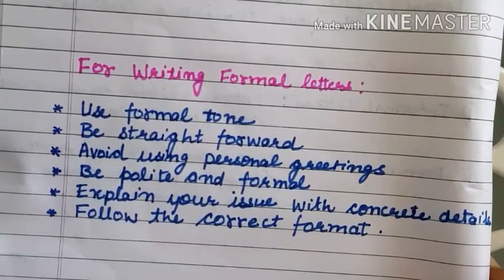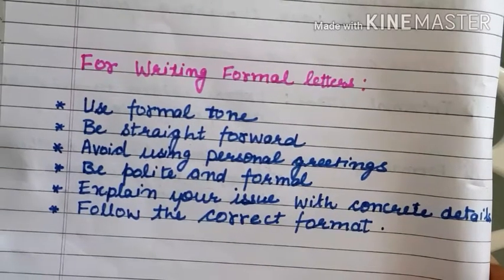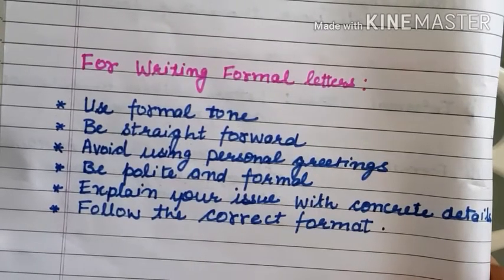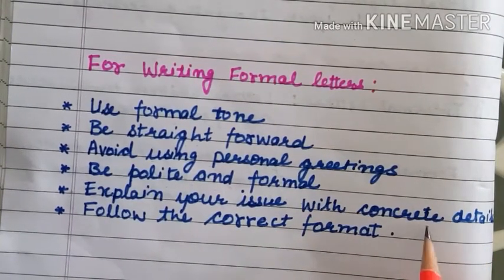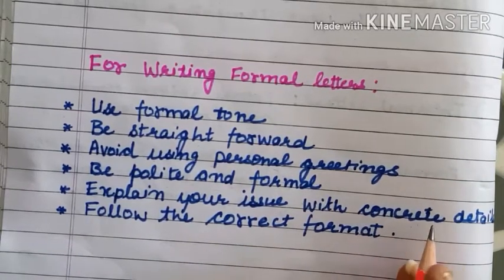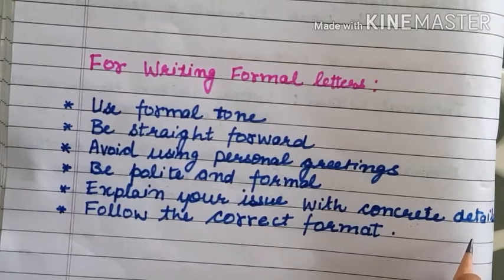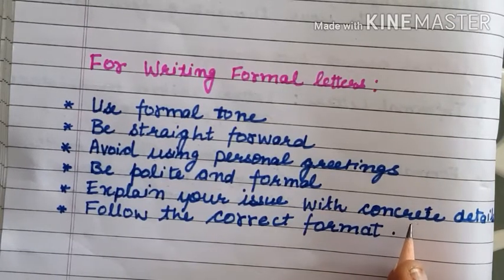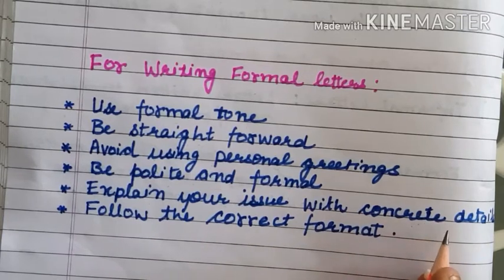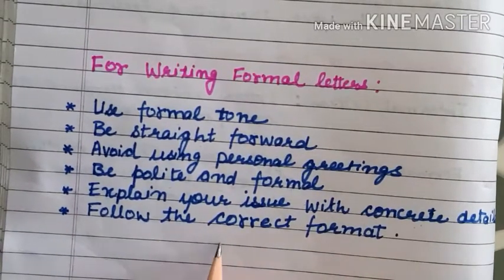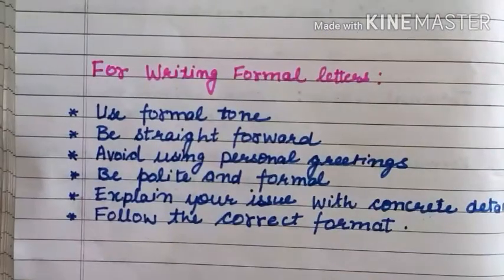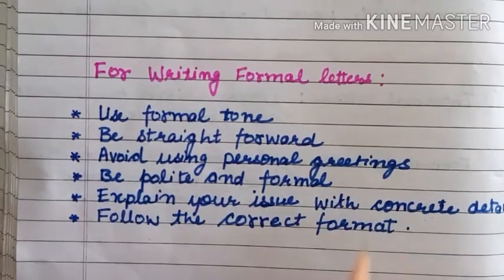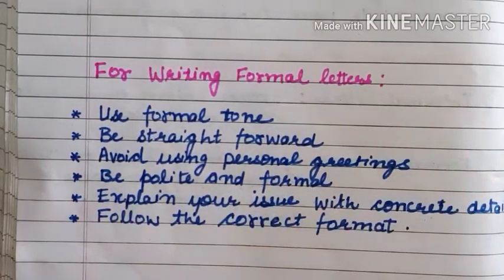In formal letters, explain your issue with concrete details. If you are complaining or requesting a letter to your principal, you have to add specific details — for example, which section you are in and what the reason is. If you are messaging an authority through a formal letter, give it a proper detail. Then follow the correct format properly.